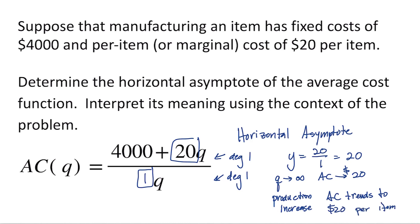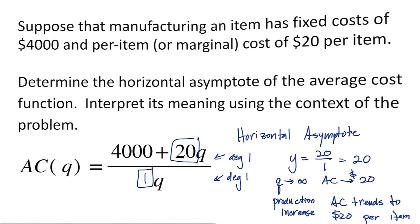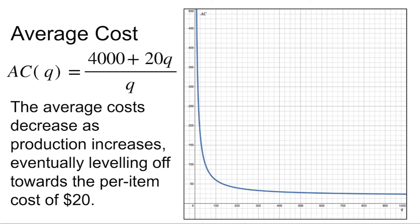Let's take a look at the graph and see what's going on. Here's the graph of our average cost function, 4,000 plus 20Q divided by Q. I've also linked this graph in the description of this video. The graph shows us that this is a decreasing function. That means that the average cost is decreasing as production increases.